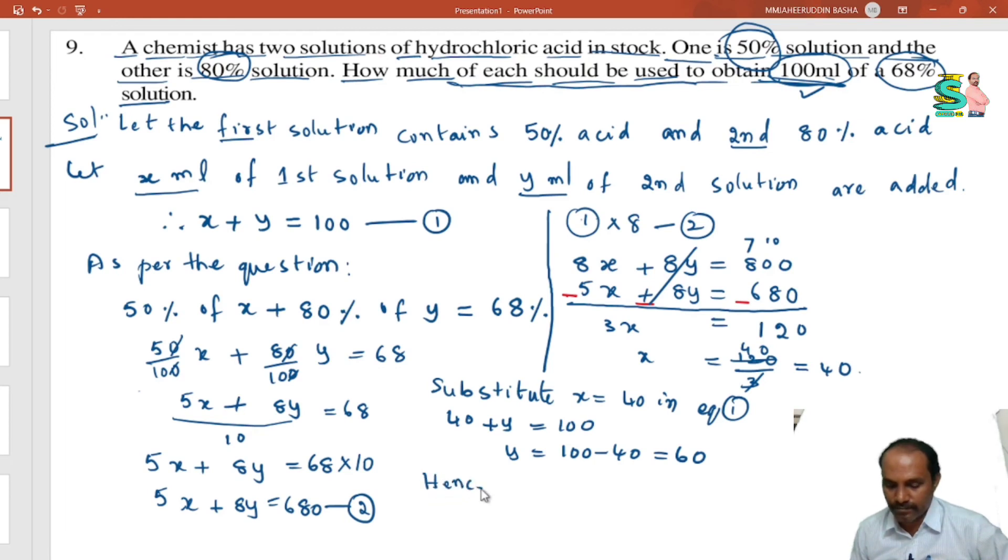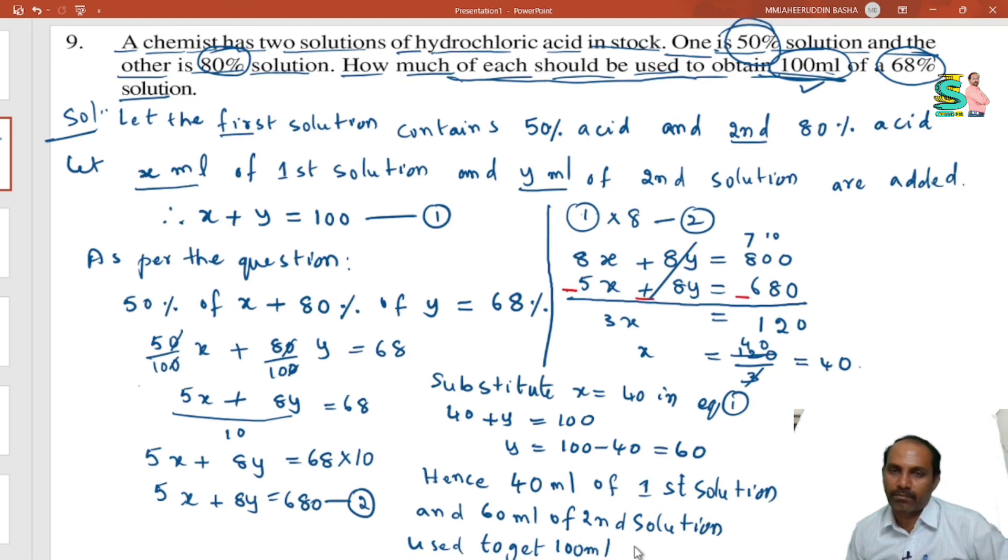Hence, 40 ml of first solution and 60 ml of second solution are used to get 100 ml of 68 percent solution.